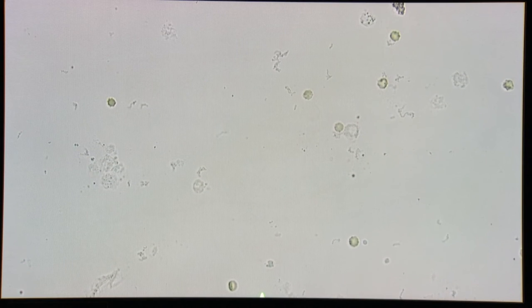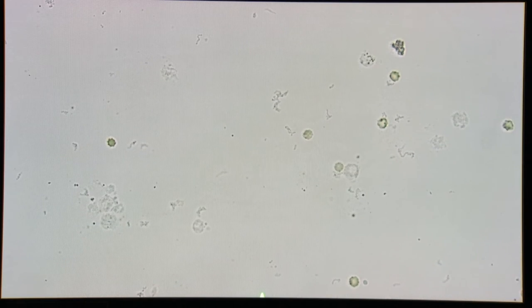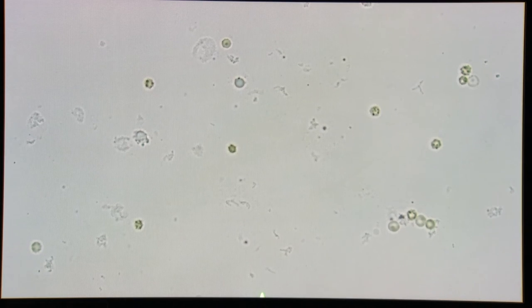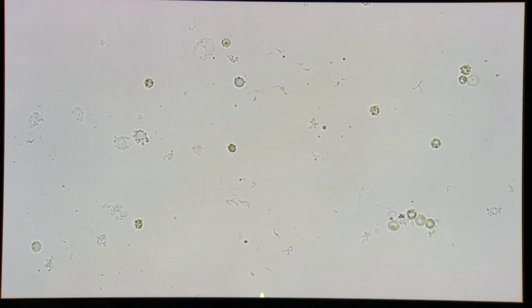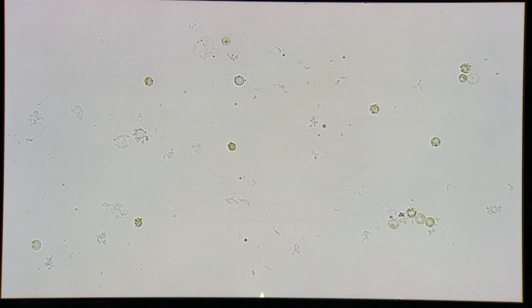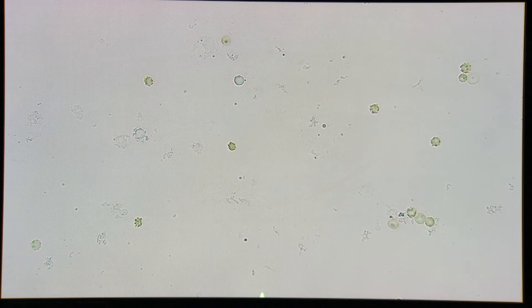For fat, crystals, debris, etc., you average what you see in a field. Scant is approximately 5% of the field, mild is 5 to 25%, moderate is 25 to 75%, and abundant is greater than 75%.